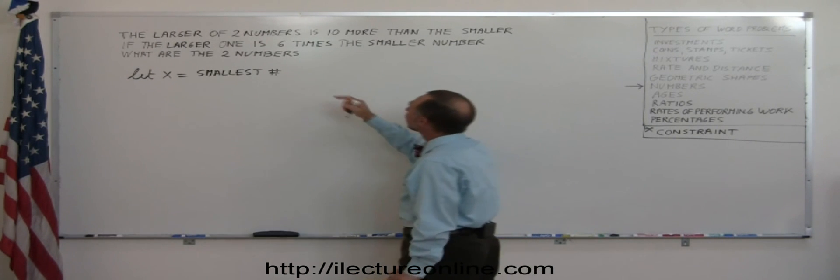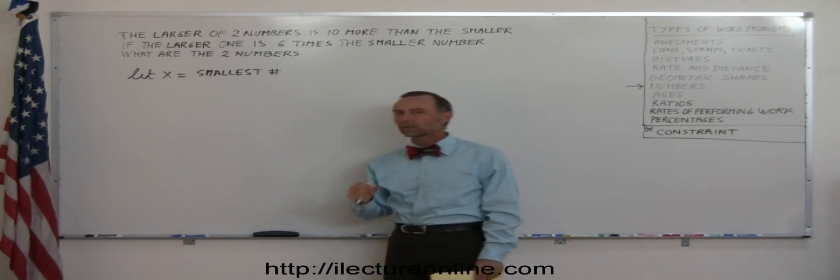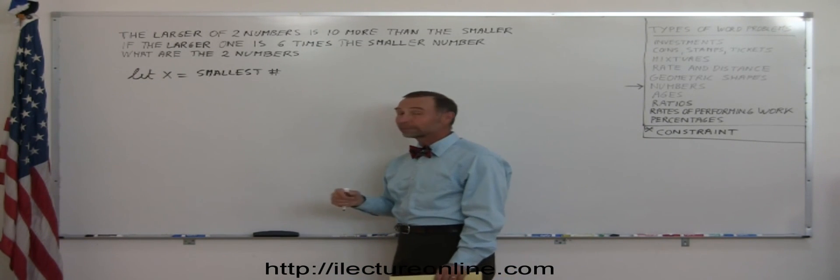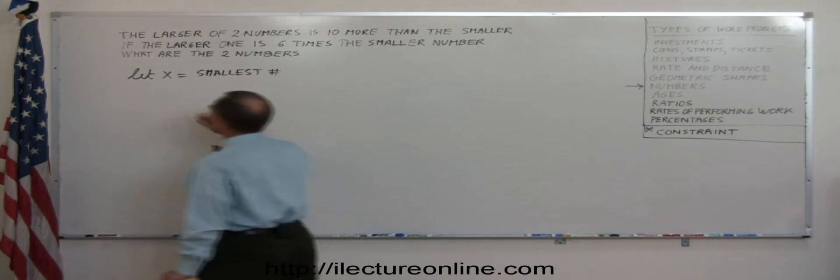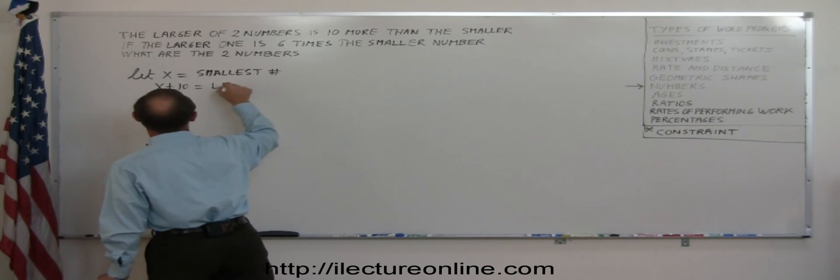Now it tells you that the larger of the two numbers is ten more than the smaller one. So if the smaller one is x, ten more than x would be x plus ten. And so we're going to let x plus ten equal the larger number.